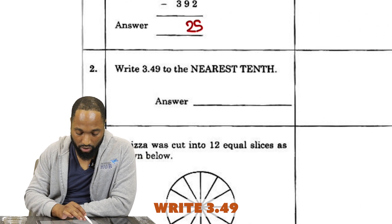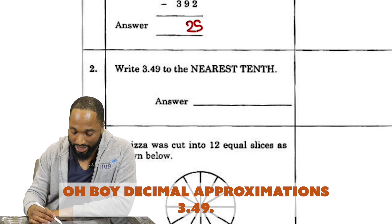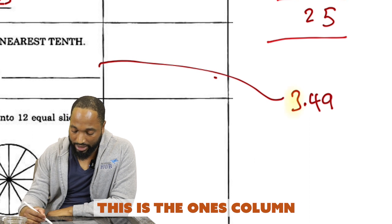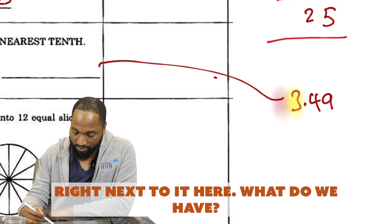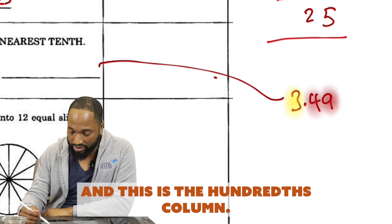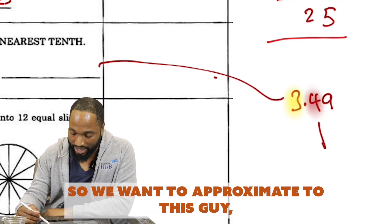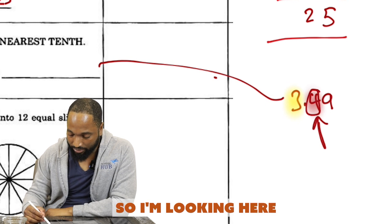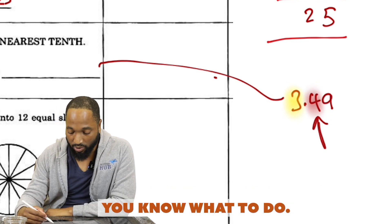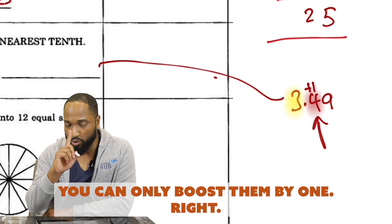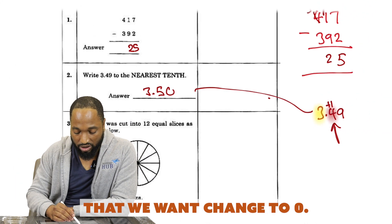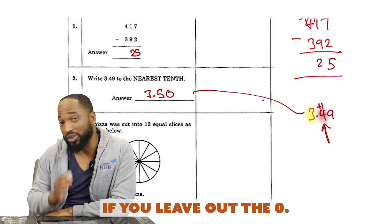Write 3.49 to the nearest tenth. Decimal approximations—do you know how to do these? This is the ones column, right next to it here we have the tenths column, and this is the hundredths column. We want to approximate to the tenths, so I'm looking here and then I'll watch the following place value which is the hundredths. I'm seeing that it's greater than five, so you give the 4 a little boost. You can only boost by one, so this becomes 3.50, or 3.5.